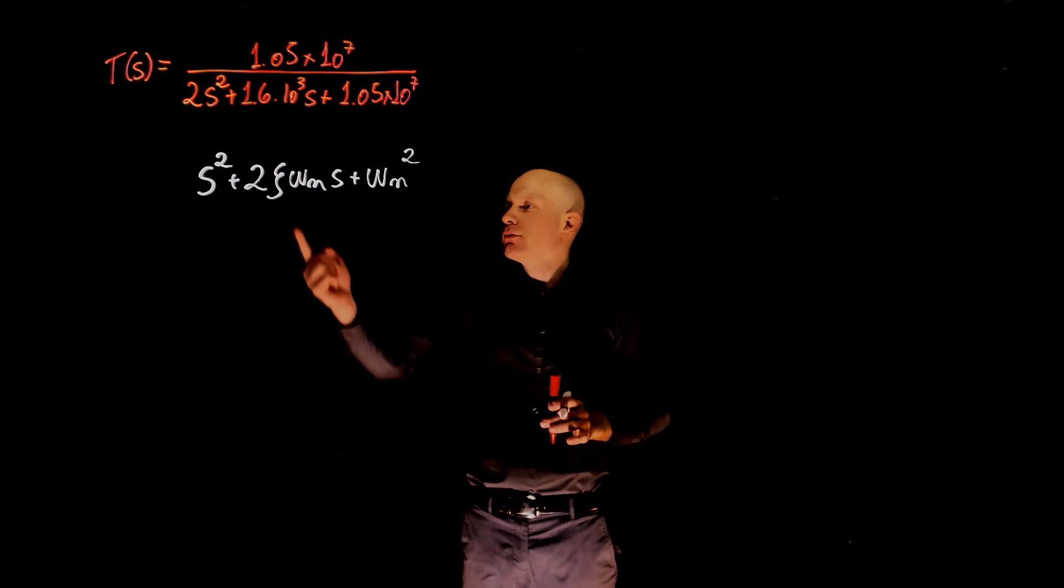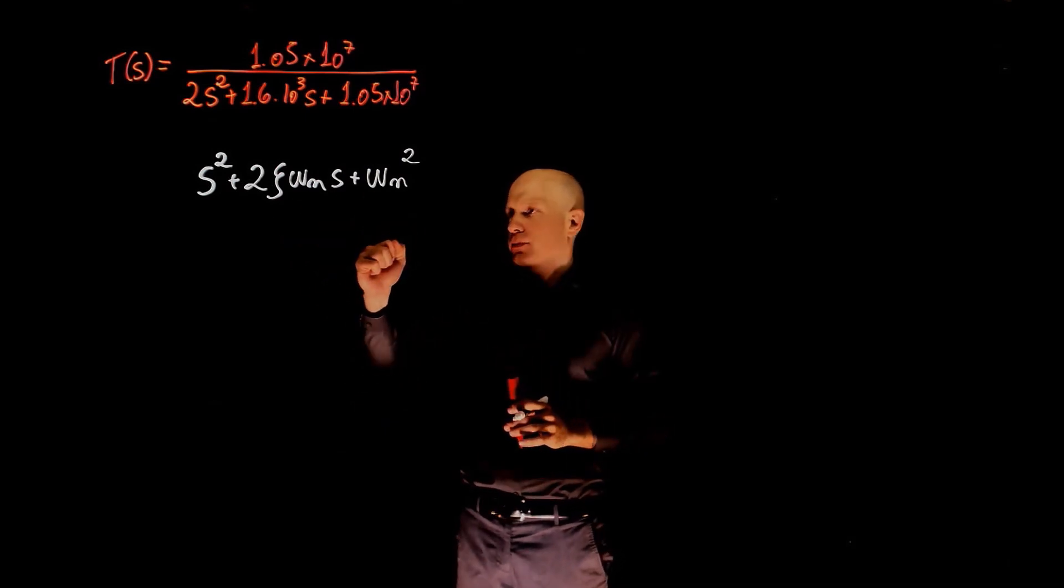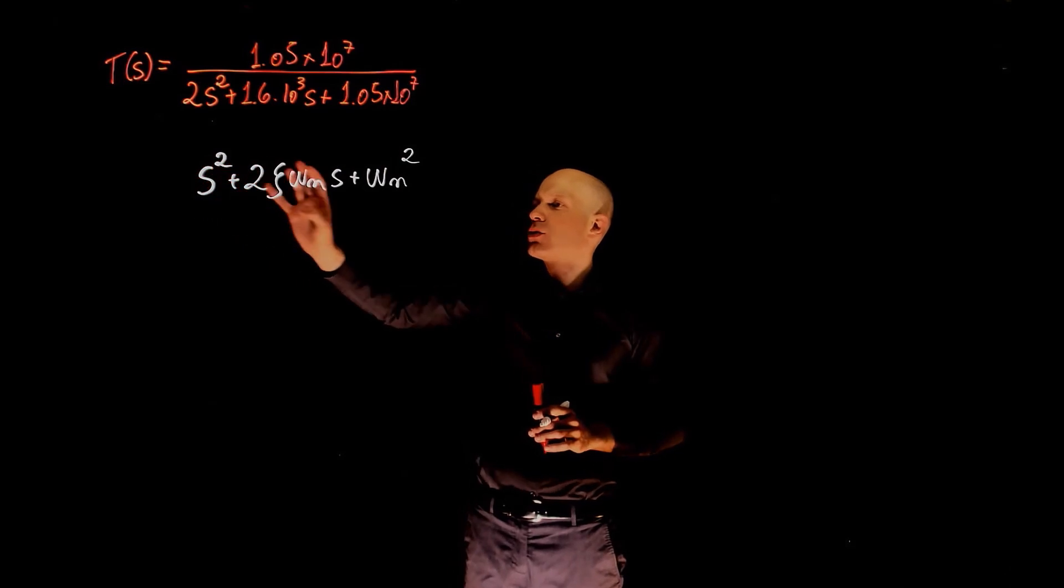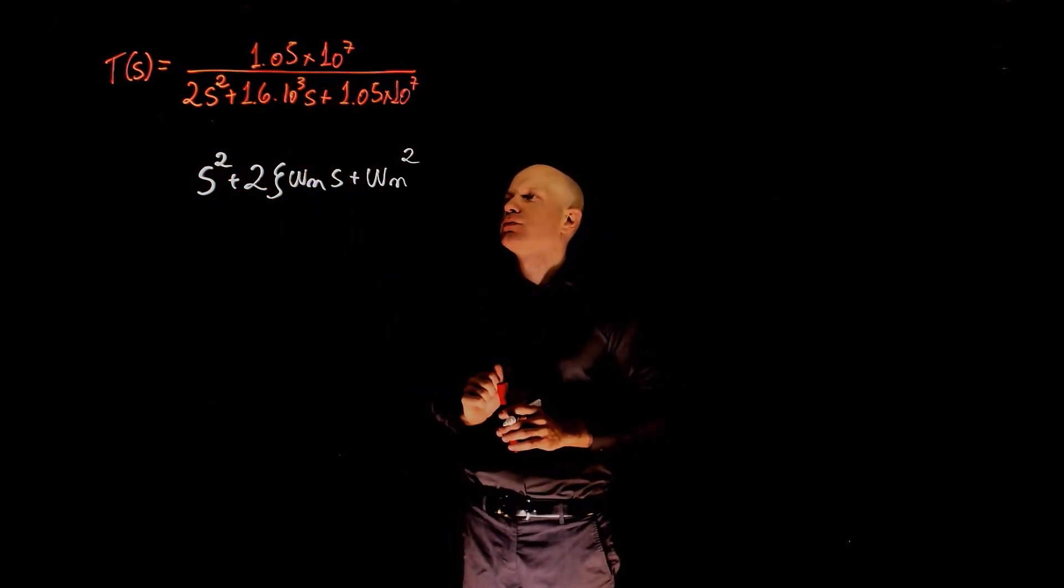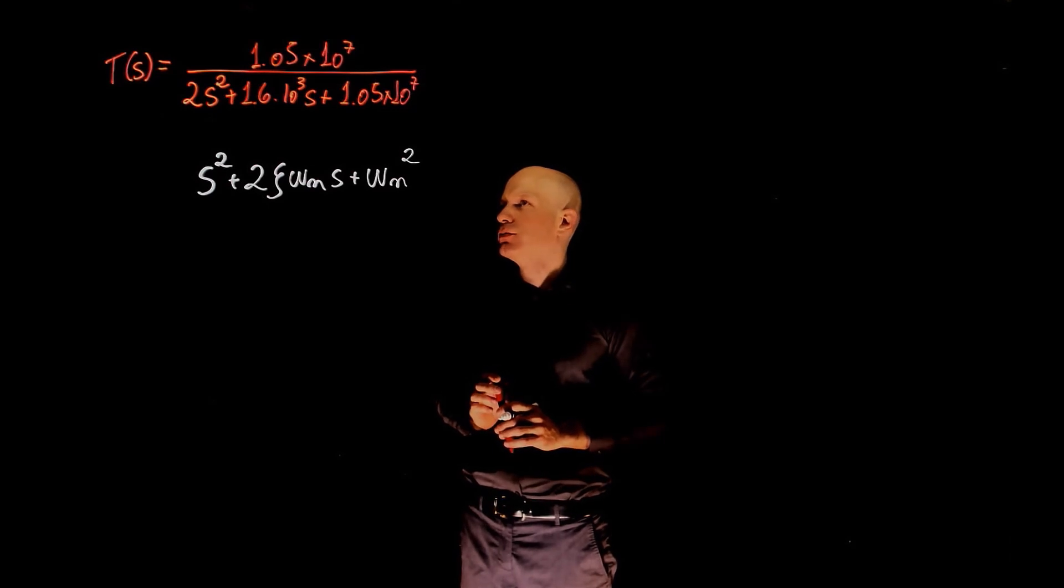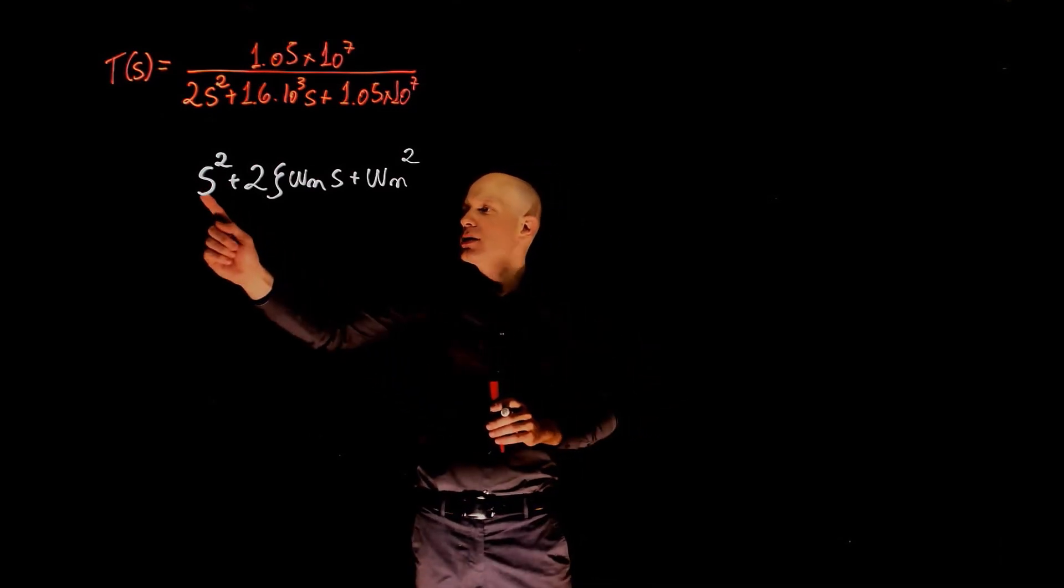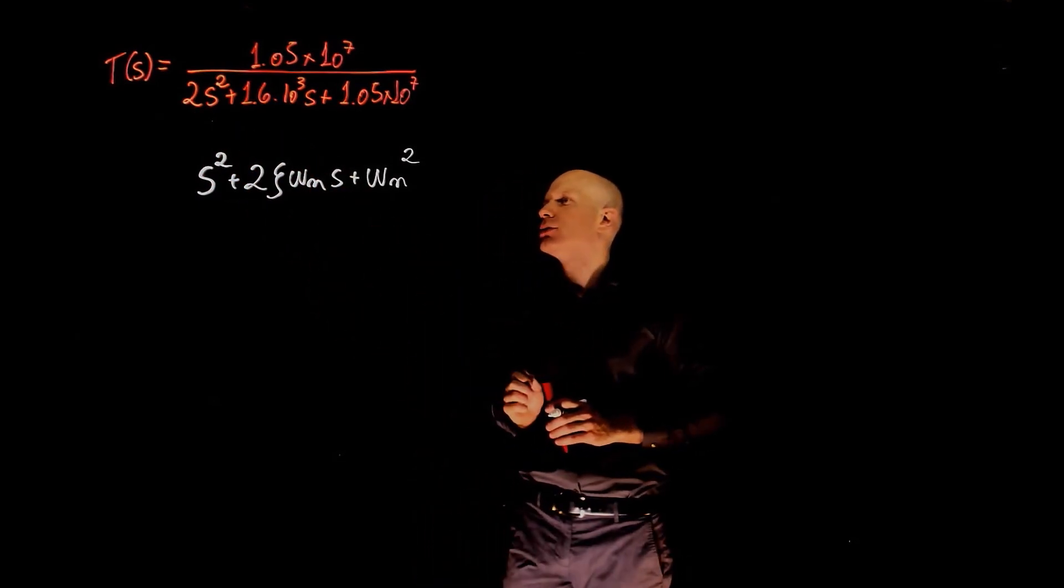All we have to do here to find zeta, omega n, and omega n is to equate the coefficients of s squared, s, and s to the power of 0 to the coefficients in the transfer function. Notice that s here is multiplied by 1 and s there is multiplied by 2.